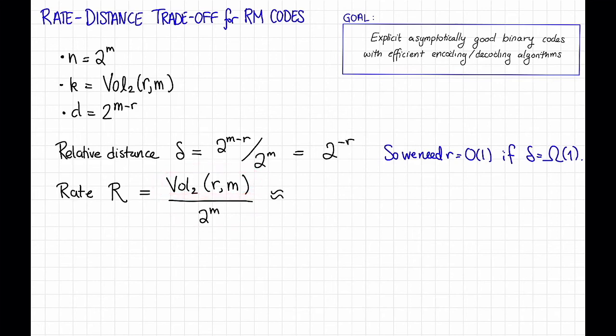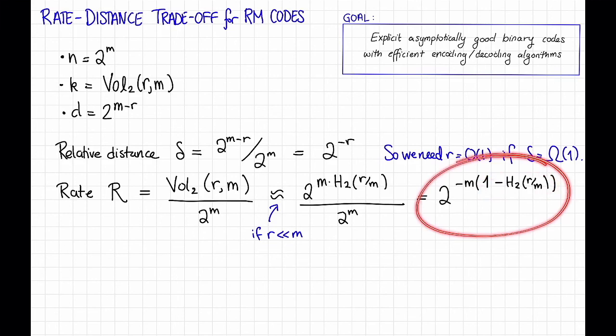So at least if R is not super close to M, this is something like 2 to the M times the binary entropy of R divided by M, divided by 2 to the M, which is equal to 2 to the minus M times 1 minus the binary entropy of R over M. Unfortunately, if R is constant, this is going to 0 real fast, so this is going to 1, so this is going to 0 real real fast as M grows.